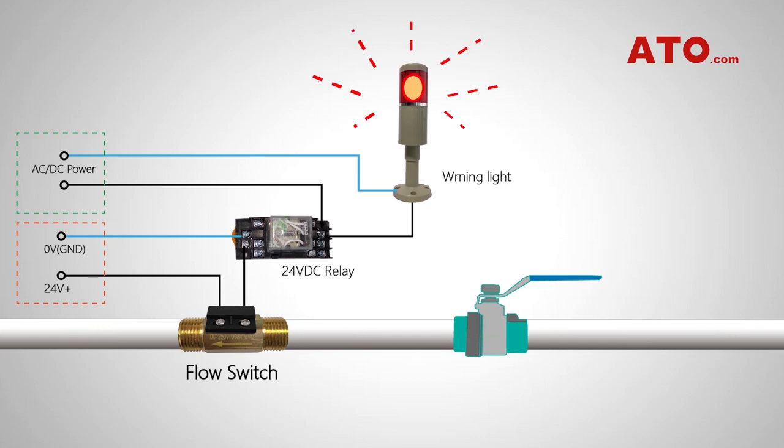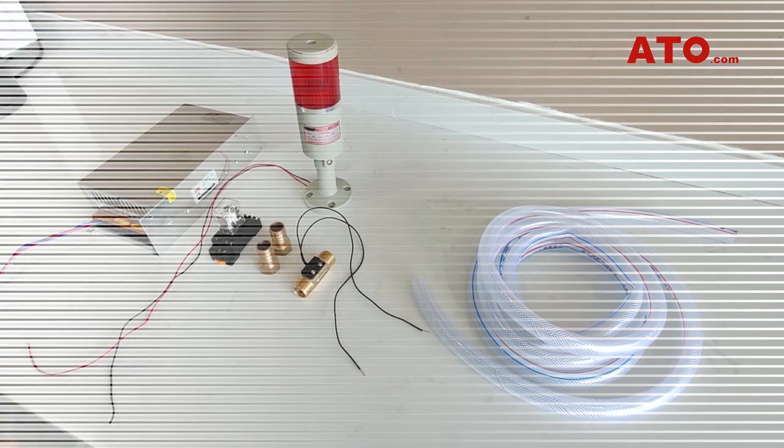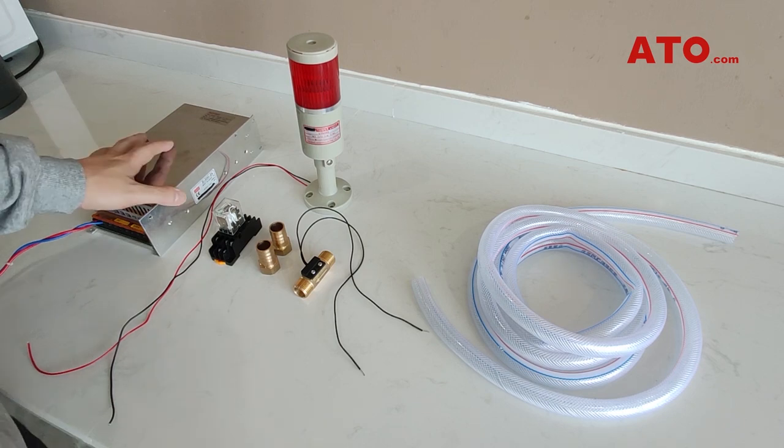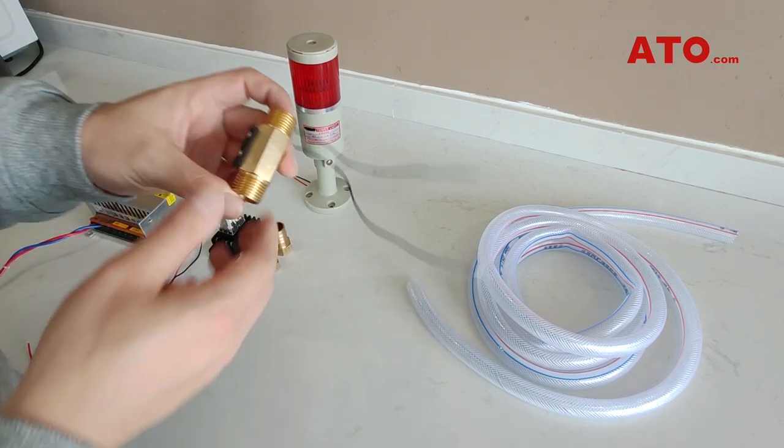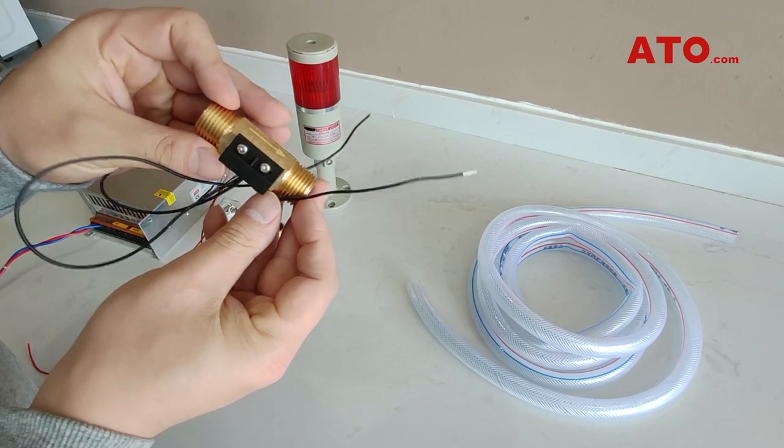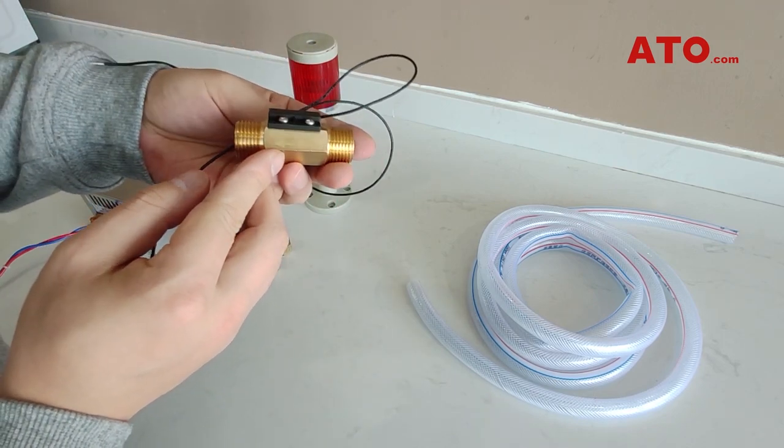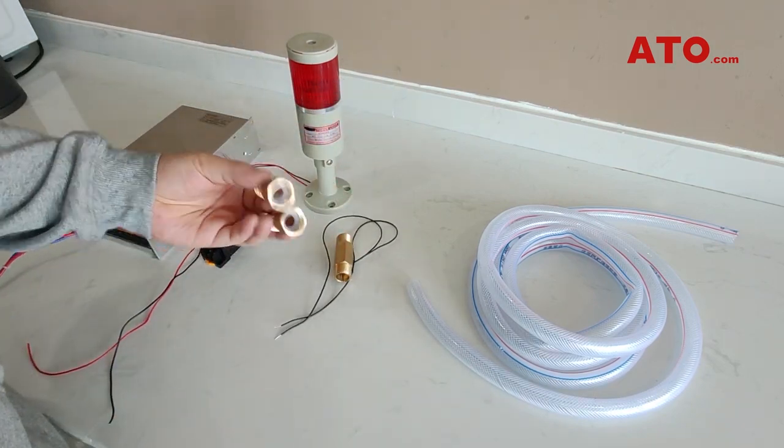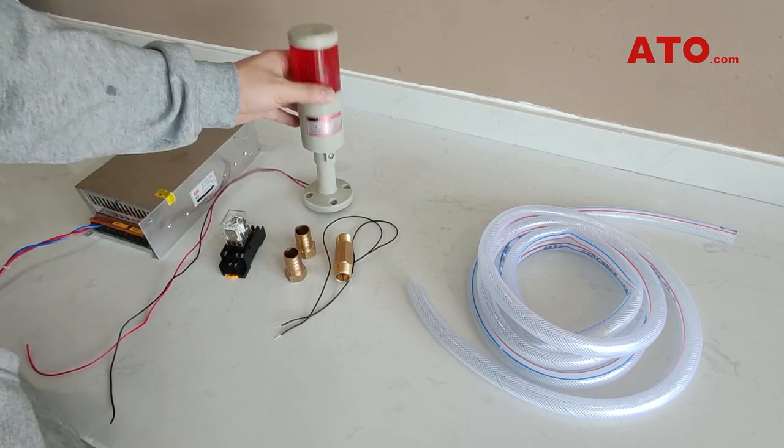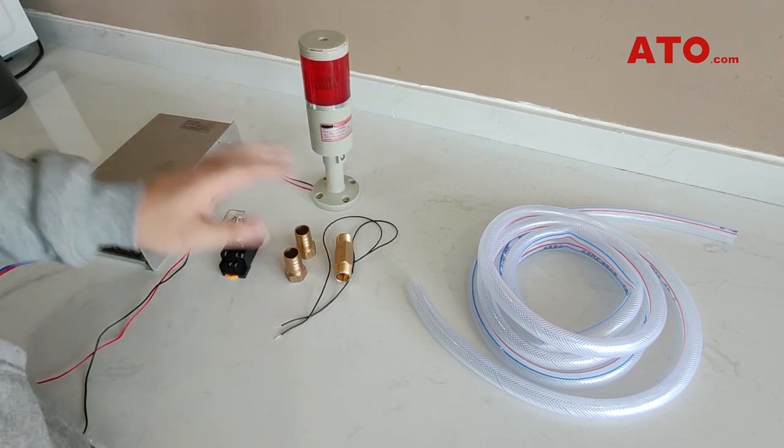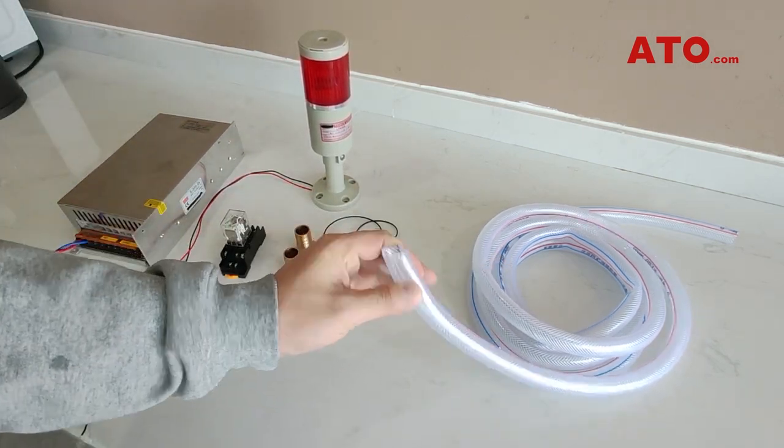This also applies to the normally open flow switch. Next is the simple demo. Things needed include a magnetic water flow switch, pagoda joints, a relay, a warning light, DC power supply, and a water pipe.